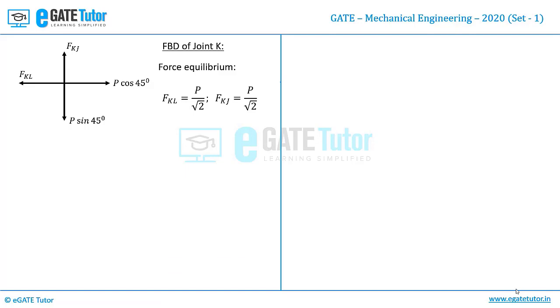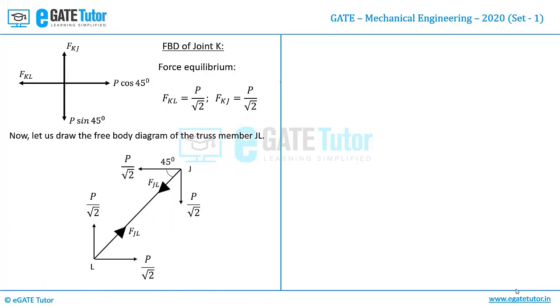Now let us try to consider the diagonal truss member which is JL in our notation and try to draw its free body diagram. This is the free body diagram of truss member JL.